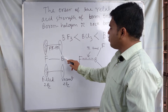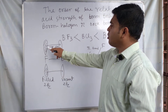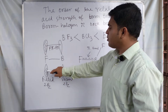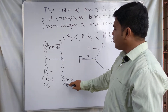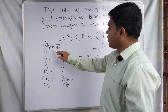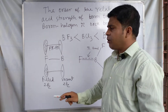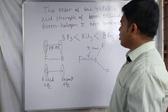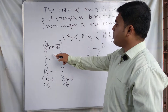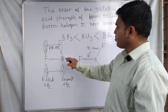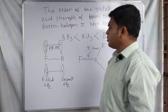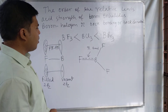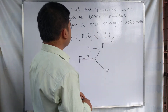As a result, the electron deficiency of the boron atom is removed by transfer of electron density from the filled 2pz orbital of fluorine to the vacant 2pz orbital of boron. Because of this pi back donation by the halogen, the electron deficiency of boron is relieved, and as a result BF3 has the least Lewis acid character.